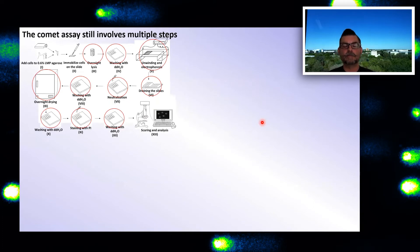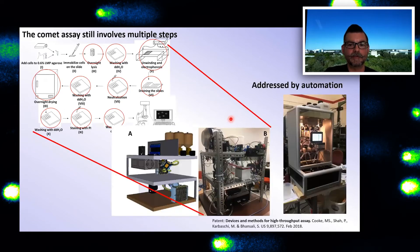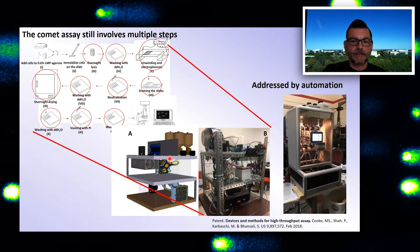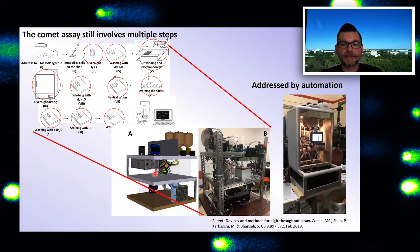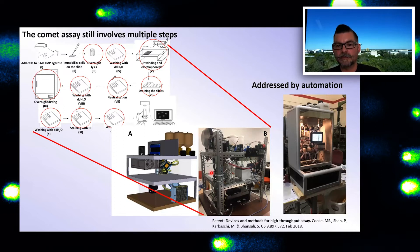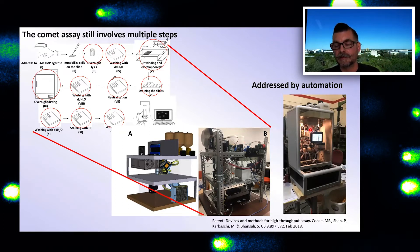The comet assay still involves multiple steps, so we thought we could address that through automation. We have an engineering prototype device to automatically process slides from the comet assay. What started as an artist's impression became an engineering prototype, and this is now the working prototype — proof of principle that full automation is achievable.